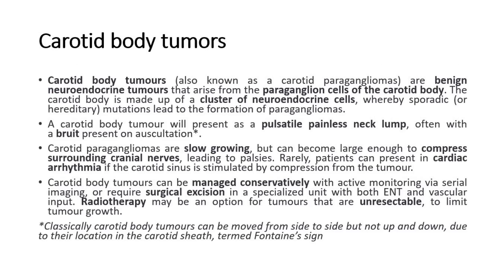Next, carotid body tumors, also known as carotid paragangliomas, are benign neuroendocrine tumors that arise from the paraganglion cells of the carotid body. The carotid body is made up of a cluster of neuroendocrine cells, whereby sporadic or hereditary mutations lead to the formation of paragangliomas. A carotid body tumor will present as a pulsatile painless neck lump, often with a bruit present on auscultation. Carotid paragangliomas are slow-growing, but can become large enough to compress surrounding cranial nerves, leading to palsies. Rarely, patients can present in cardiac arrhythmia if the carotid sinus is stimulated by compression from the tumor.